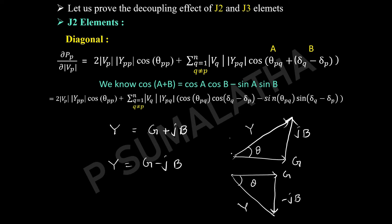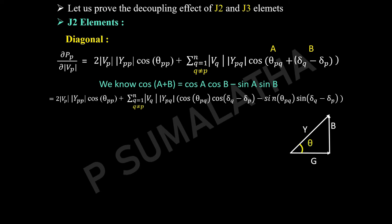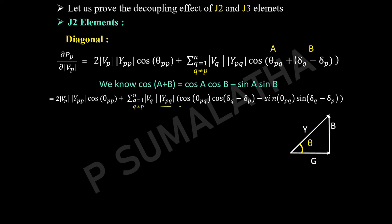Now this equation contains only conductance values. Since we assumed G << B (conductance is very much less than susceptance), this equation has a very small value which we approximate as zero. Therefore the changes in real power with respect to voltage magnitude are negligible — ∂P_p/∂|V_p| ≈ 0. Let us consider this as equation number 2.